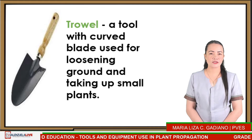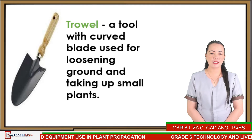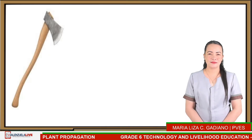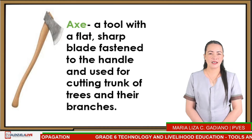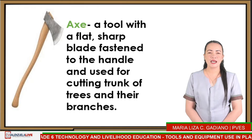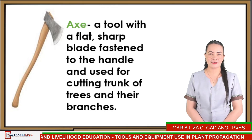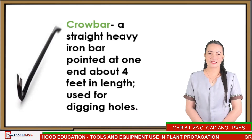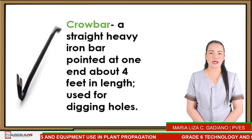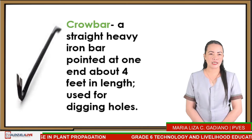The rake is used for smoothening the soil and gathering loose leaves, hay, or straw. Next is TROWEL — a tool with a curved blade used for loosening ground and taking up small plants. Next is AX — a tool with a flat, sharp blade fastened to the handle, used for cutting the trunk of trees and their branches.